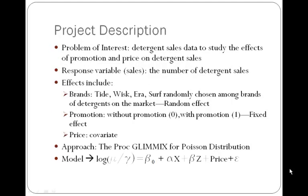As a project description, I identify my problem of interest as the detergent sales data in order to study the effects of promotion and price on the sales of the detergent. The response variable in this case is the number of detergent sales. Because the detergent sales are recorded by packages of detergents sold through a number of weeks, these data are discrete and could be considered Poisson distributed.